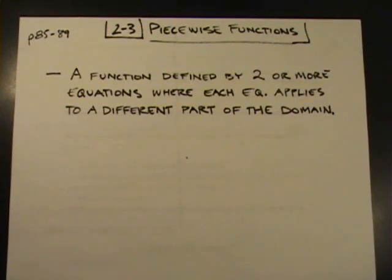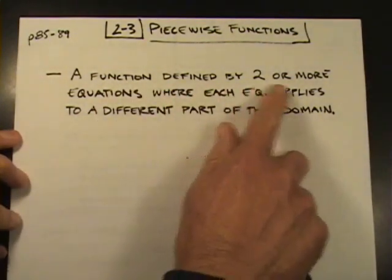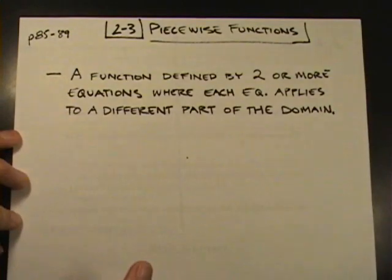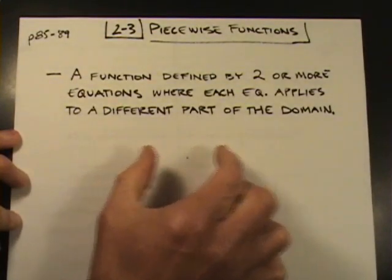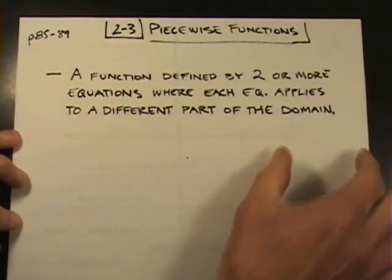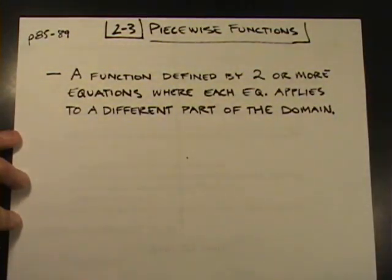Okay, welcome to 2-3. We're talking about piecewise defined functions. That's nothing more than a single function, but one that is defined by two or more equations. And that's where each equation applies to a different part of the domain. So the domain is our x variables that are allowed, and we take and slice up the horizontal parts of different graphs and piece them together. That's where we get the term piecewise.